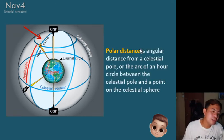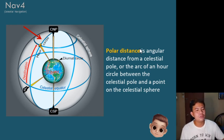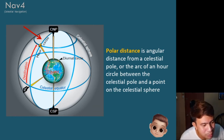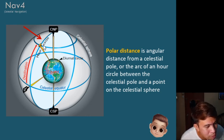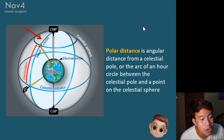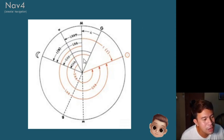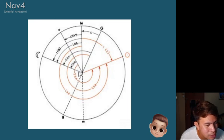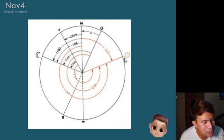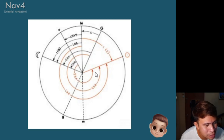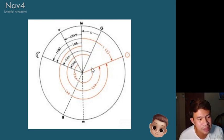The polar distance is the angular distance from a celestial pole — the arc of an hour circle between the celestial pole and the point on the celestial sphere. It is measured from the pole down to the star. All of these terms will be used later for the time diagram. The first point of Aries serves as the reference, and the angle from it to the star is your sidereal hour angle, also referred to as SHA.